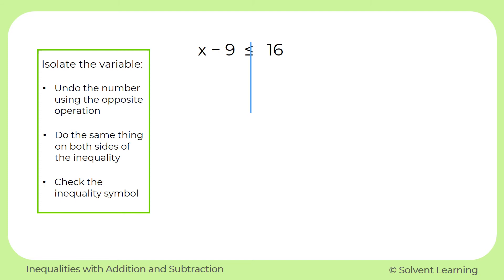So on the left side, we have our variable x. But we also have minus 9. Now we want to undo that to get x by itself. So the opposite of subtracting 9 is to add 9. And we'll do that on both sides.